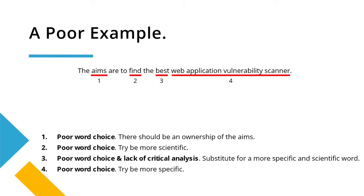So here's a poor example. Despite not having much to say, there's actually quite a lot to talk about, so let's get into this. Starting with number one: the aims. There's a lack of ownership of the aims here — what I mean by ownership is, the aims of what? One easy fix is by saying 'this report aims.' So I would rather read 'this report aims to find out the best vulnerability scanner,' for example.